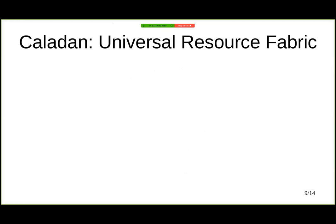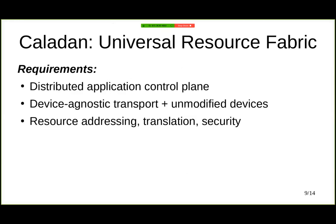In order to have this universal resource fabric that efficiently interconnects all the resources in the system, we need to fulfill three requirements with Caladan. One is supporting distributed application control planes. The other is offering device-agnostic transport that at the same time works with unmodified devices. And finally, we want to provide resource addressing translation and security.